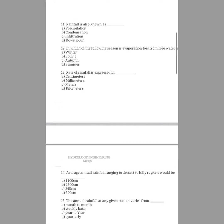Question number thirteen: the rate of rainfall is expressed in what unit? The options are centimeter, millimeter, kilometer, meter. The answer is option A, centimeter, because the rate of rainfall is expressed in centimeters of water during a given period of time. One centimeter of rainfall is the quantity of water collected on a certain area due to rainfall which becomes one centimeter in height.